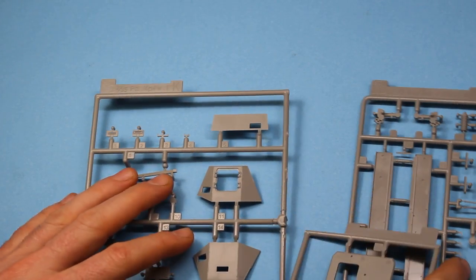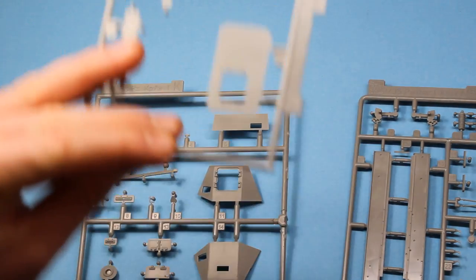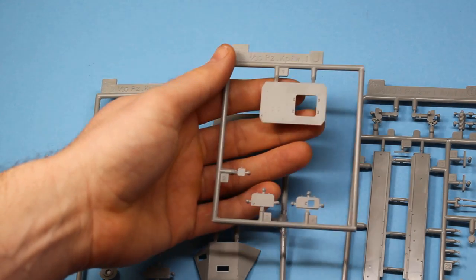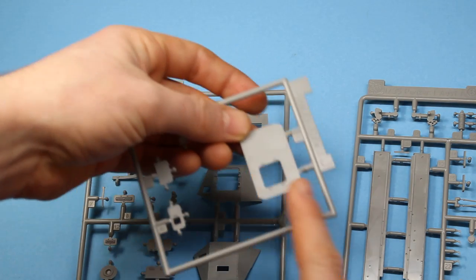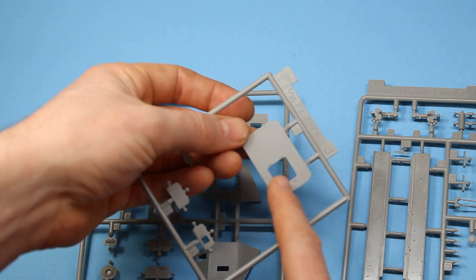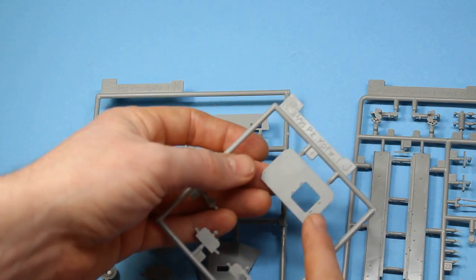Then we've got a few more sprues here which start making up parts for the superstructure there. You've got probably one of the only new sprues in this kit which makes it the initial, so it's a new roof with the initial version for just the hatches without the cupola.